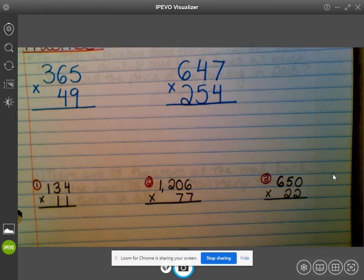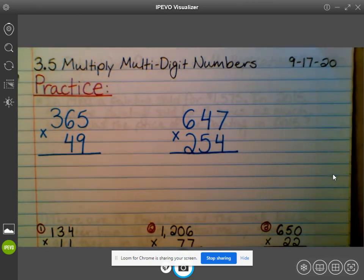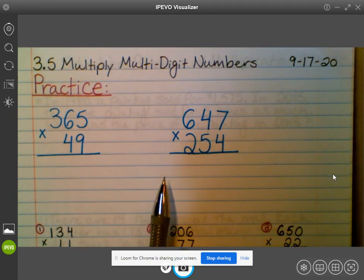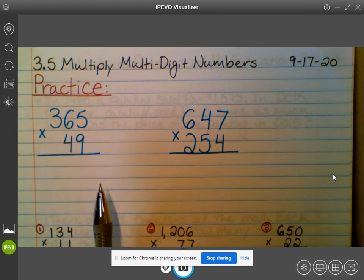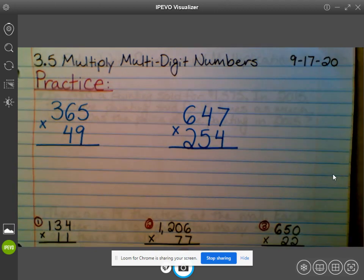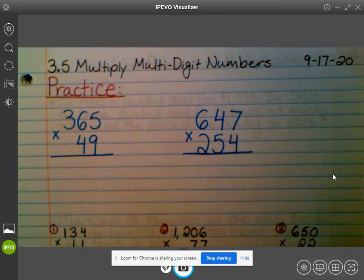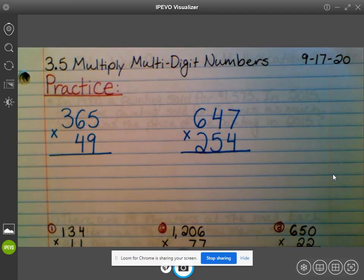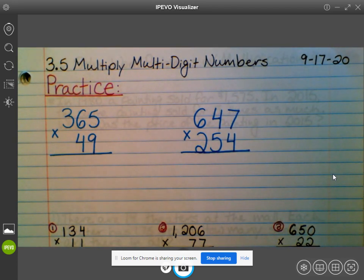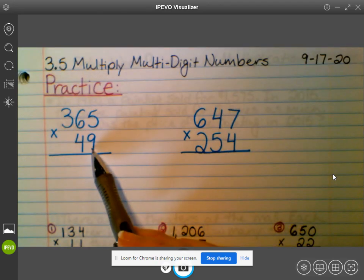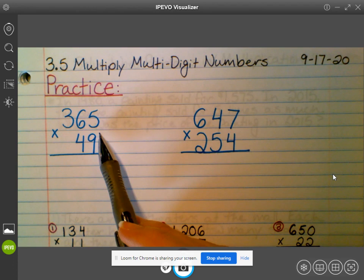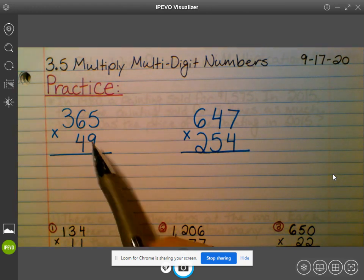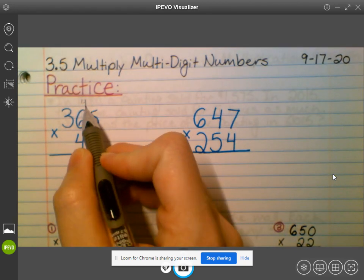All right, we're going to take a look at our two problems up here that we're going to do together. So these two are very similar to what we were doing yesterday with a three-digit number and a two-digit number. What is my first step? Yes, we are starting on the bottom all the way at the right, the nine, and we're going to multiply nine times five. What is nine times five? 45. So we're going to carry the four and bring down our five.